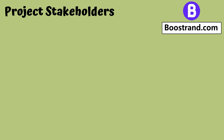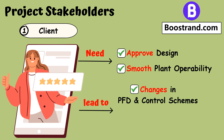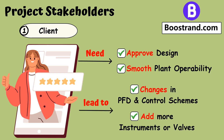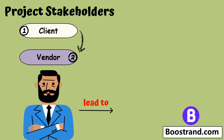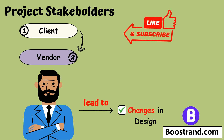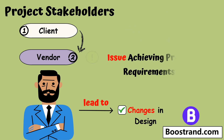We shouldn't forget that the engineering company is not working on its own. There are other project stakeholders and considerations, such as the client or plant owner who needs to approve the design. They may have requirements to ensure smooth plant operability, which may impose changes in PFD and control schemes, add more instruments or valves. Vendors of equipment and instruments may also need considerations that can change the design — for example, we may find that vendors of a compressor or a control valve cannot achieve the requirements provided by the engineering company.